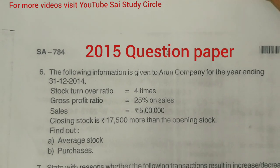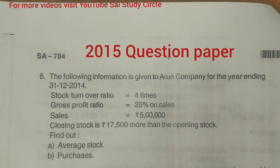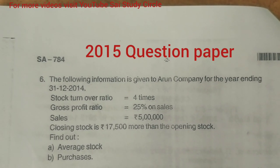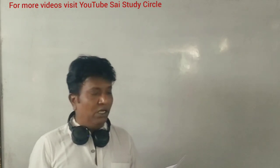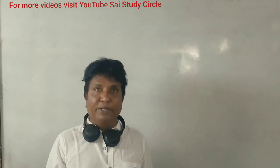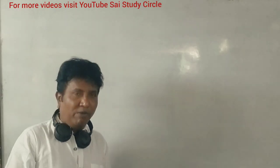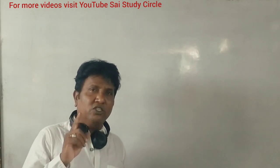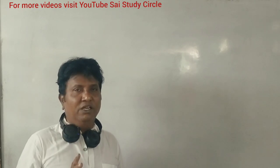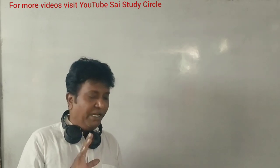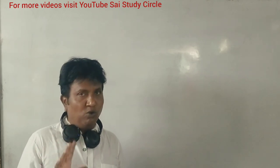This is a 2015 question paper problem worth six marks. The following information is given for a company for the year ended 31st December 2014: stock turnover ratio is 4 times, gross profit ratio is 25% on sales, sales is 5 lakhs, and closing stock is 17,500 more than opening stock. We need to find the average stock. The stock turnover ratio formula is cost of goods sold divided by average stock.